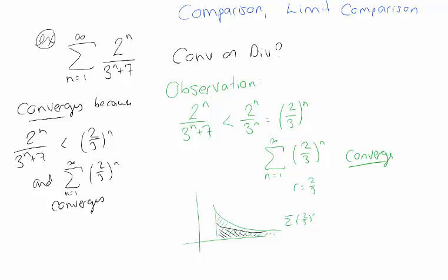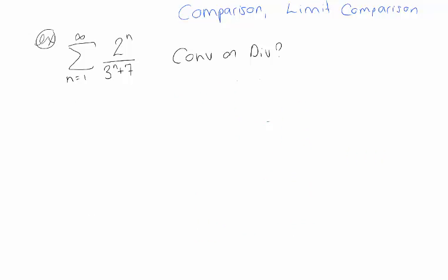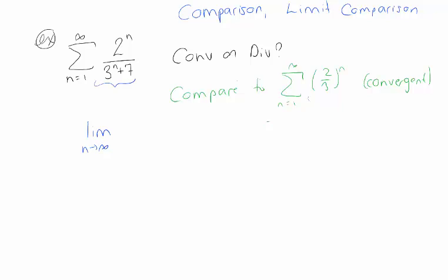If you really wanted, you could also do the limit comparison test. I'm going to make the observation that I want to compare this to the convergent geometric series with 2/3 as the ratio. For the limit comparison test, I have to take a limit — hence the name — and I'm going to divide these terms by those terms. It doesn't matter which ones go on top or bottom. I like to have the more complicated thing in the numerator, so I'll put 2/3 to the n divided by 2^n over (3^n + 7).